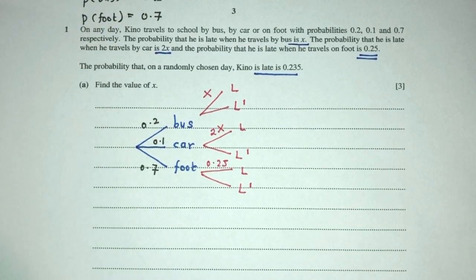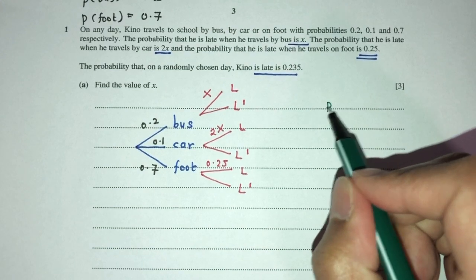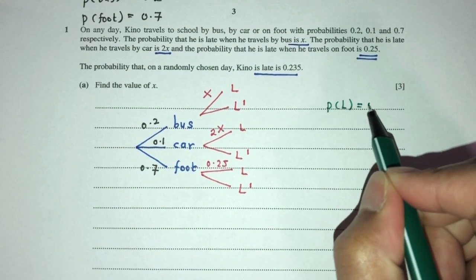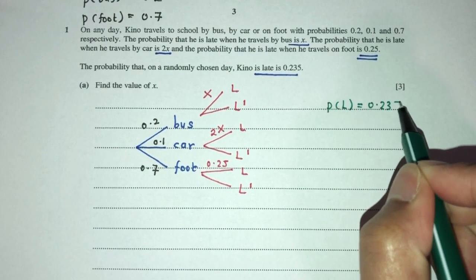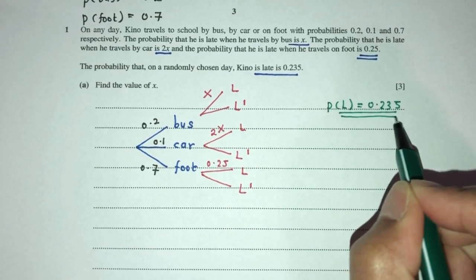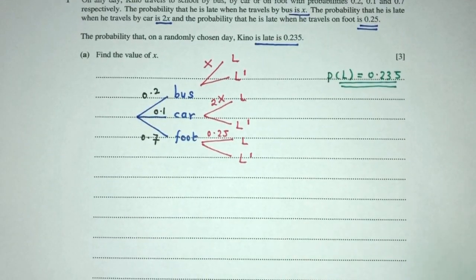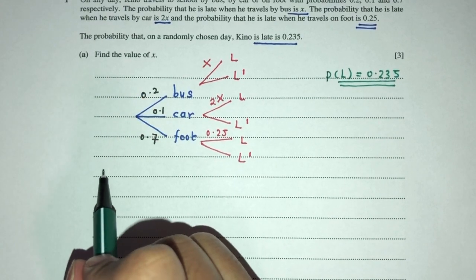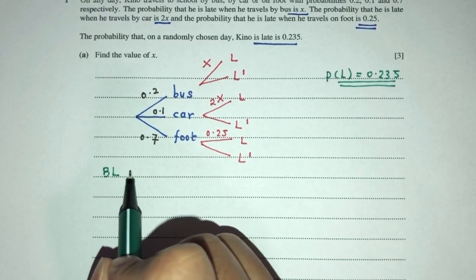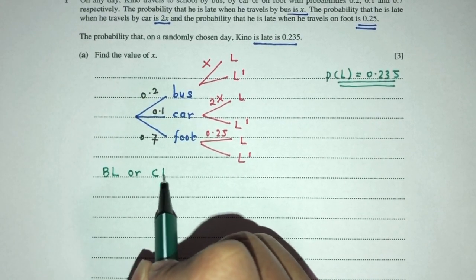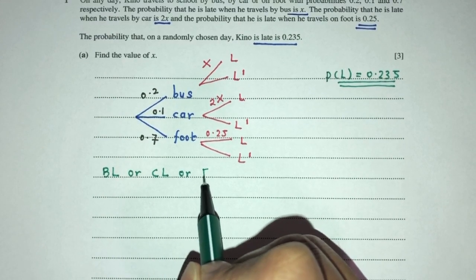Now we know from the question that the probability of him being late is going to be 0.235. So we have to use this to find the value of x. Okay, so now we need him to be late. So he could take the bus and be late or the car and late or foot and be late.